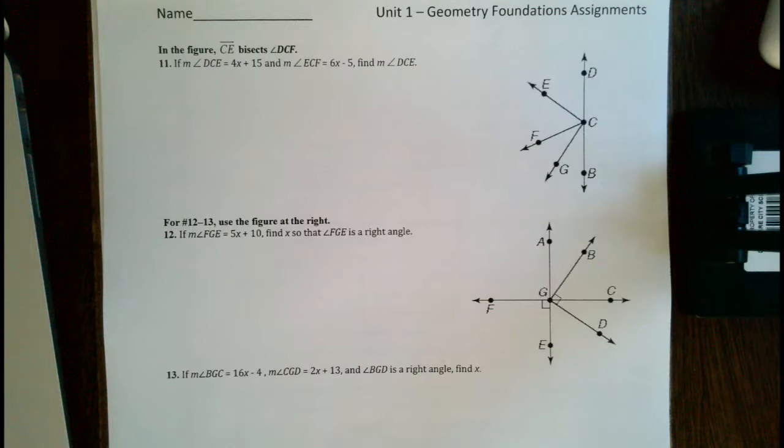If measure of angle DCE equals 4x plus 15, and measure of angle ECF equals 6x minus 5, find the measure of angle DCE.